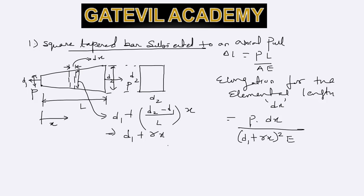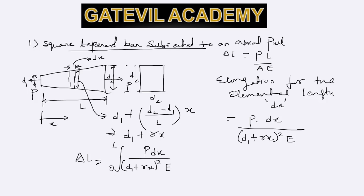To find the elongation over the total length L, we integrate. Delta L equals the integral from 0 to L of P dx divided by (d1 plus gamma x) squared times E. Since P and E are constants, they come outside the integration, giving P by E times the integral from 0 to L of dx over (d1 plus gamma x) squared.